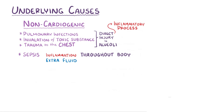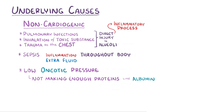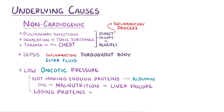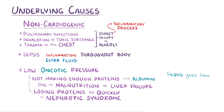Another category of non-cardiogenic causes is having low oncotic pressure, and this could result from not making enough proteins, like albumin, due to malnutrition or from liver failure. Alternatively, it could be due to losing protein too quickly, like in nephrotic syndrome. Regardless of the cause, low oncotic pressure leads to fluid moving from the capillary and into the interstitial space throughout the body, and in the lungs that results in pulmonary edema.